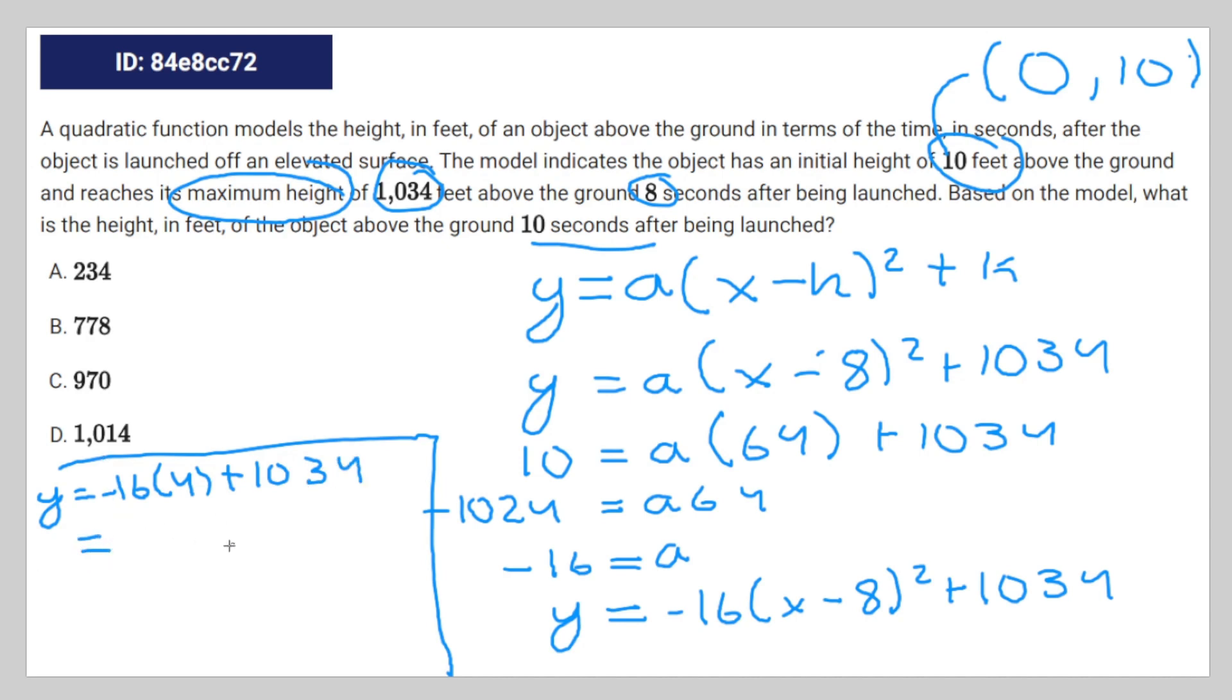So that's going to be 1,034 minus 64, which is equal to 970. Therefore, C is your answer.